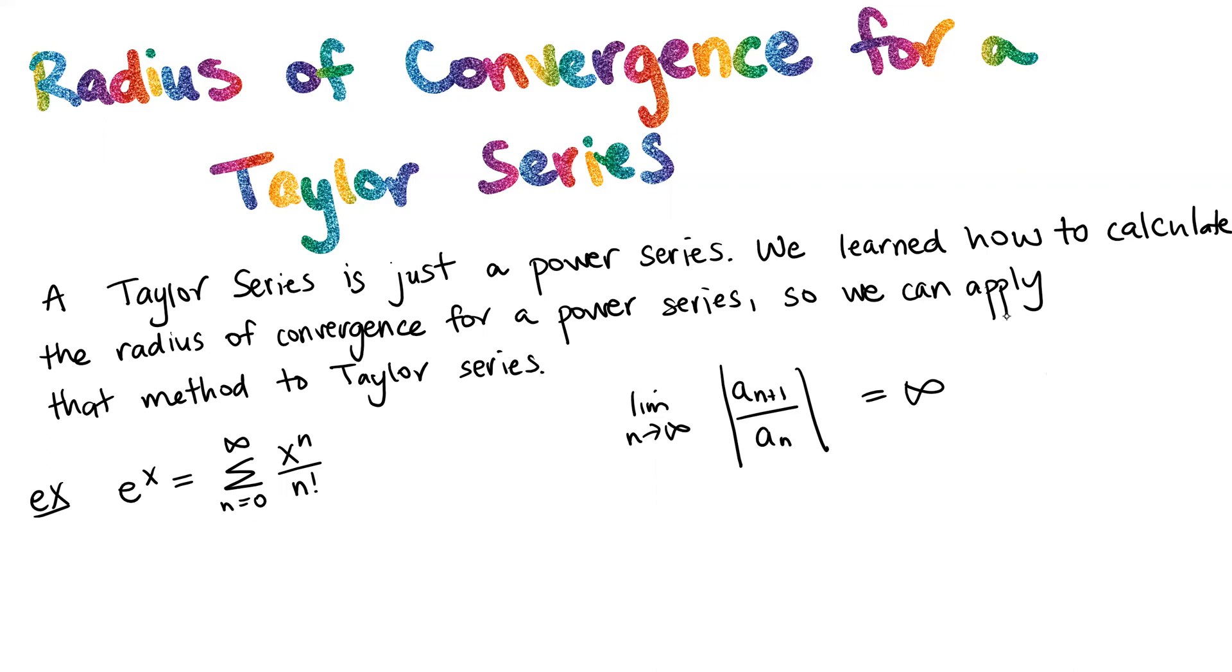And if this limit is equal to some constant k times |x minus b|, then we simply set this less than one because the ratio test says that this will converge as long as this limit is less than one. So we set it to be less than one, meaning that |x minus b| is less than one over k, so our radius of convergence would be one over k.